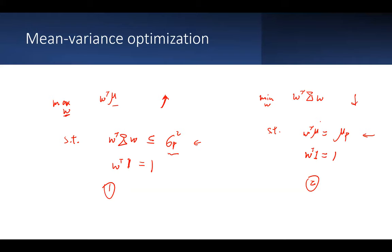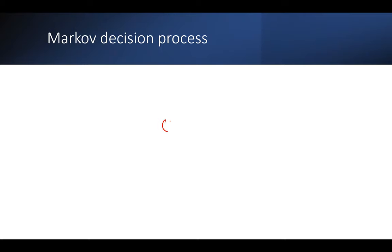Now let's talk about portfolio management optimization using reinforcement learning. Reinforcement learning tries to do the same thing — find a set of weights W such that expected return is maximized or risk is minimized, depending on the objective. To introduce reinforcement learning, we need to look at the Markov Decision Process (MDP), described by the key tuple: state space, action space, transition probability, reward function, and discount factor.